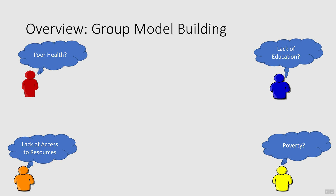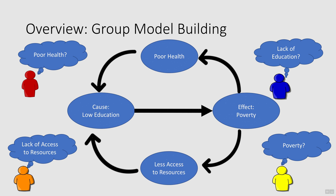Group model building involves bringing together a variety of stakeholders with different perspectives and working through a number of activities to create a shared model of the complex problem. As the model reflects the perspectives of the problem, it will vary depending on who was included in the modeling session. The model is not a true representation of the problem, but rather a representation of their shared perspective of the problem.